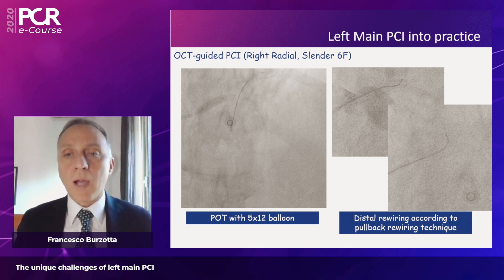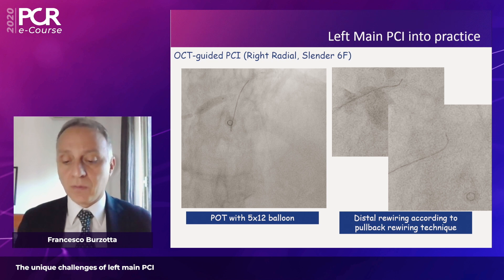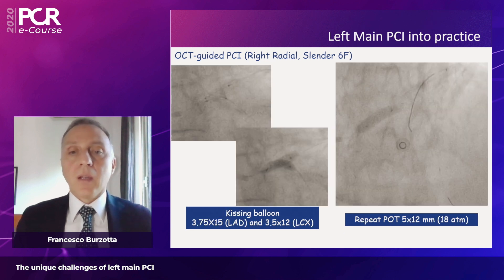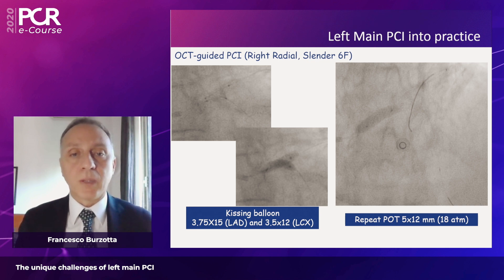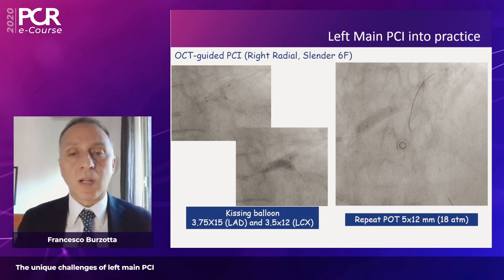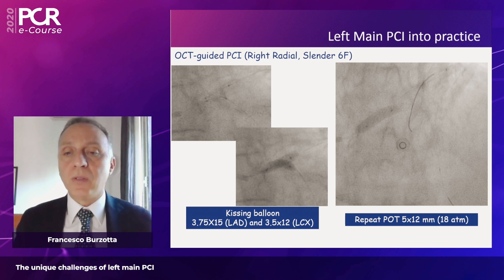For circumflex rewiring, a workhorse wire was appropriately shaped and the best angiographic incidence — which was surprisingly the cranial view — was used. Pullback rewiring was performed entering the distal portion of the large circumflex. Two balloons were then advanced for kissing balloon inflation: 3.75 mm for the LAD and 3.5 mm for the circumflex, appropriately sized. Sequential dilation was performed individually to check expansion of each balloon, followed by simultaneous kissing balloon inflation, and then a repeat POT with the same 5 by 12 mm balloon at high atmospheres.